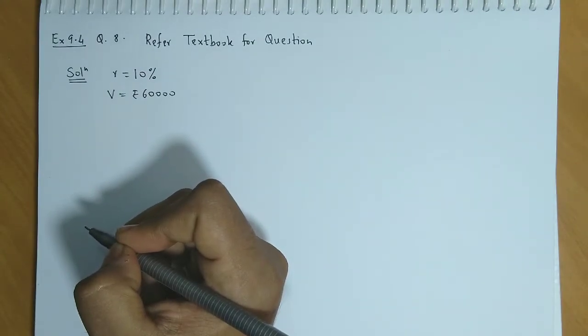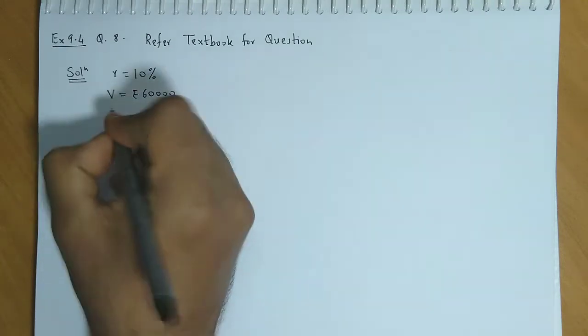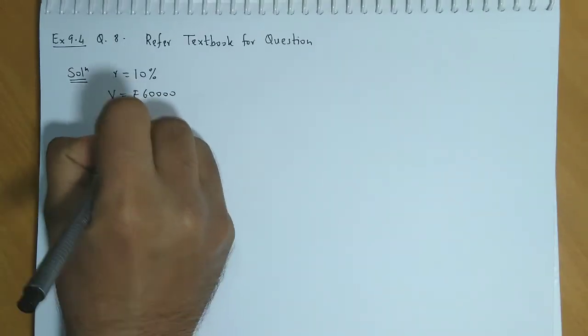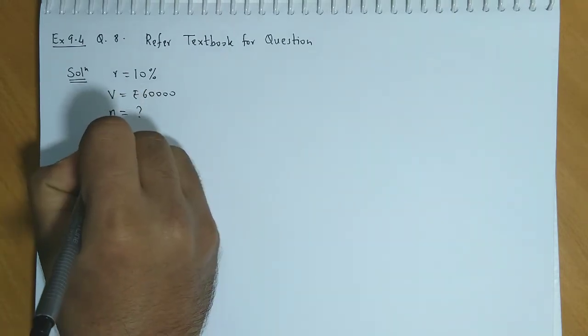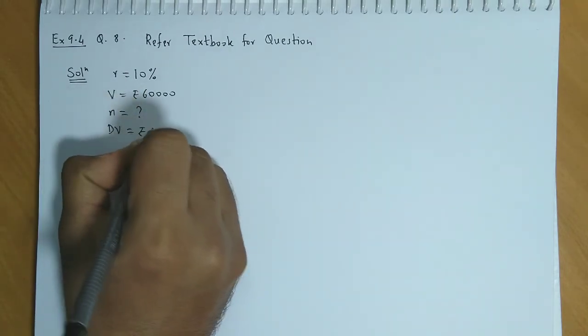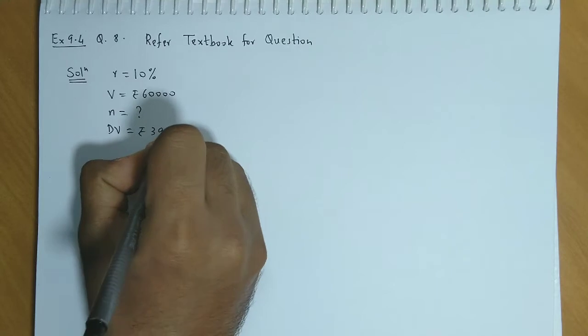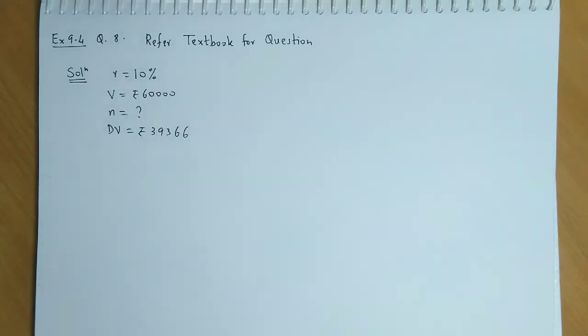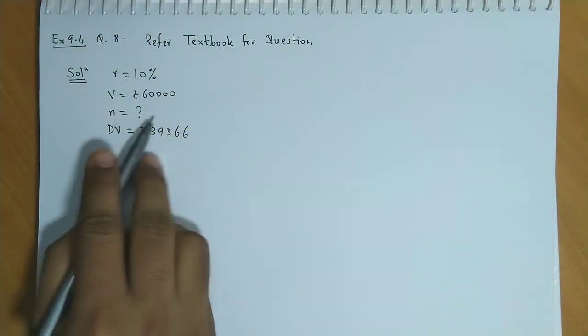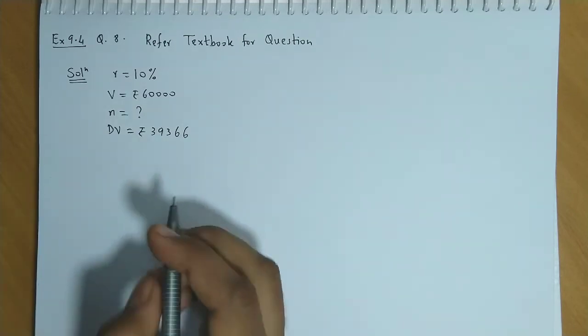After how many years will the value of the stock be 39,366? We need to find N, and the depreciated value is 39,366. So we have to find the duration, that is N.